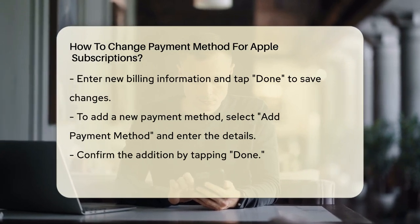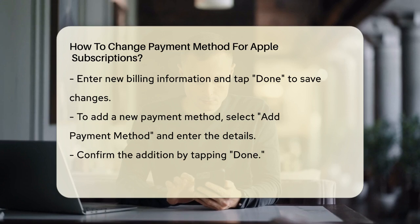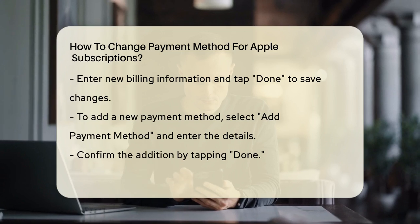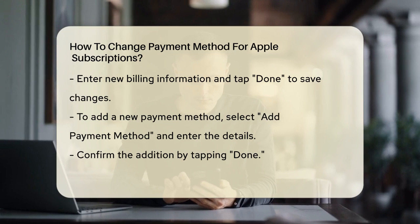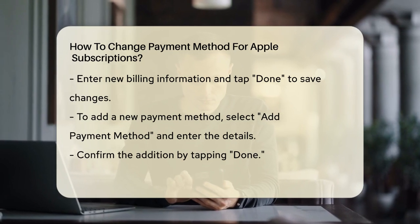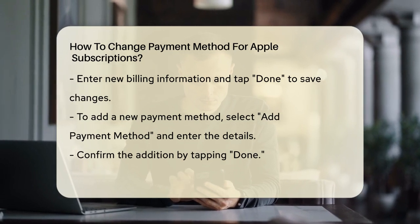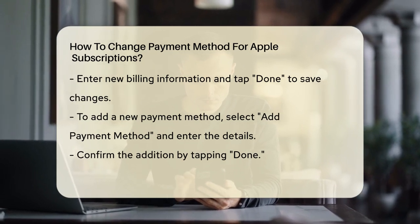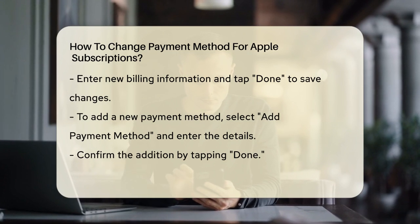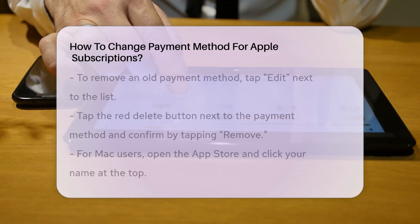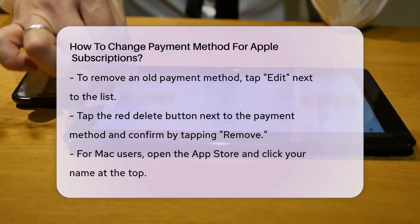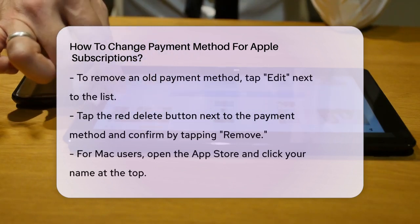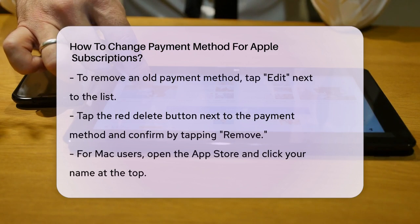If you're having issues with your current payment method or want to switch to a new one entirely, you can add a new payment method. Tap Add Payment Method, enter the details of your new payment method, and tap Done. To remove an old payment method, tap Edit next to the payment methods list, then tap the red Delete button next to the old payment method. Confirm by tapping Remove.